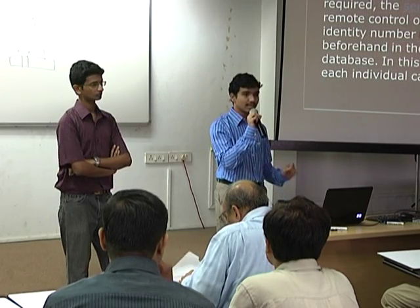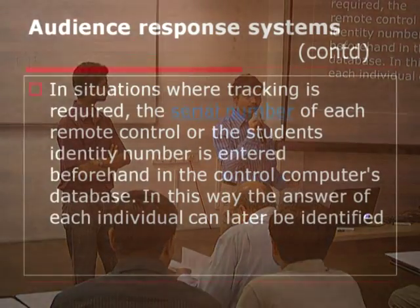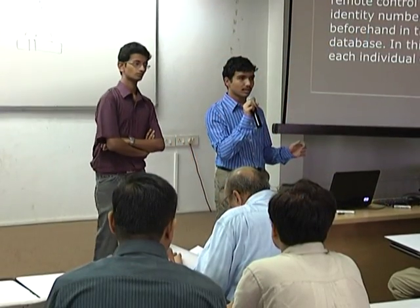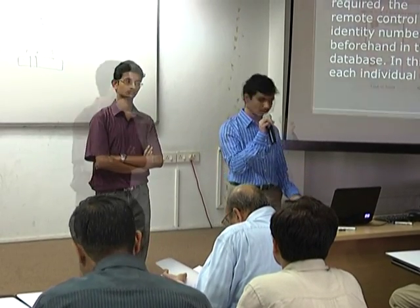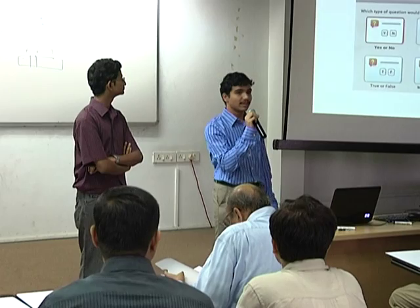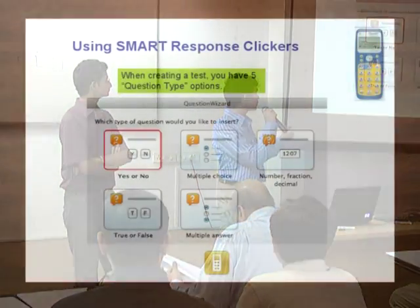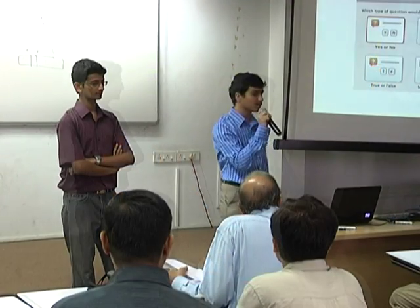There will be a serial number behind every clicker, and this serial number helps to identify which person has given what answers. All data regarding the clicker IDs will already be stored in the quiz presenter's database. Using the clickers you can answer various kinds of questions — yes or no, multiple choice, numerical, true or false, or more than one answer questions.